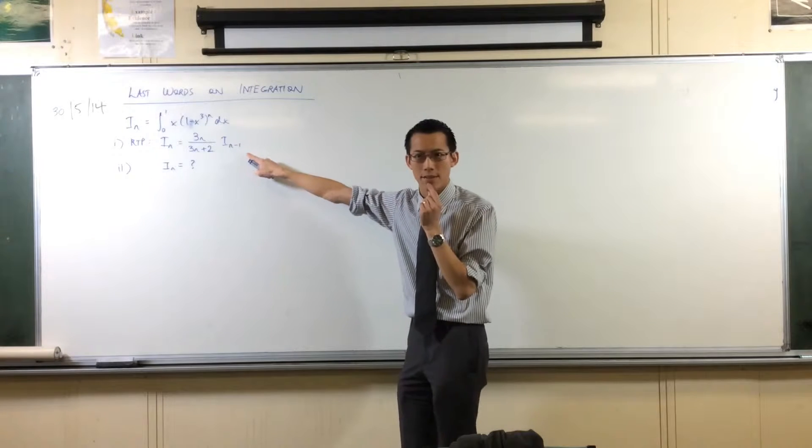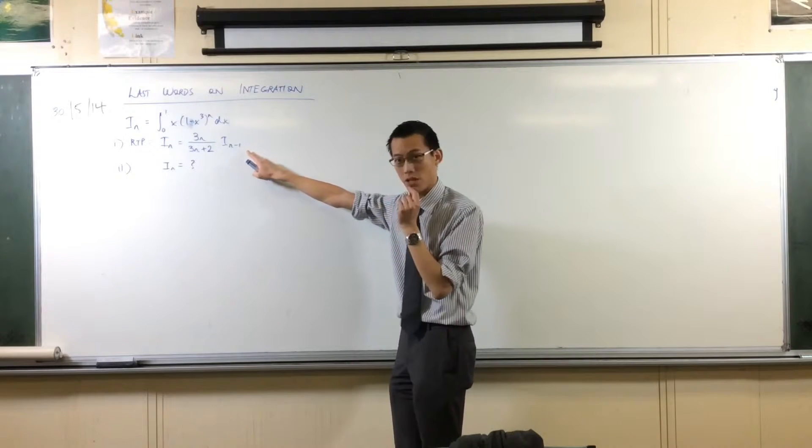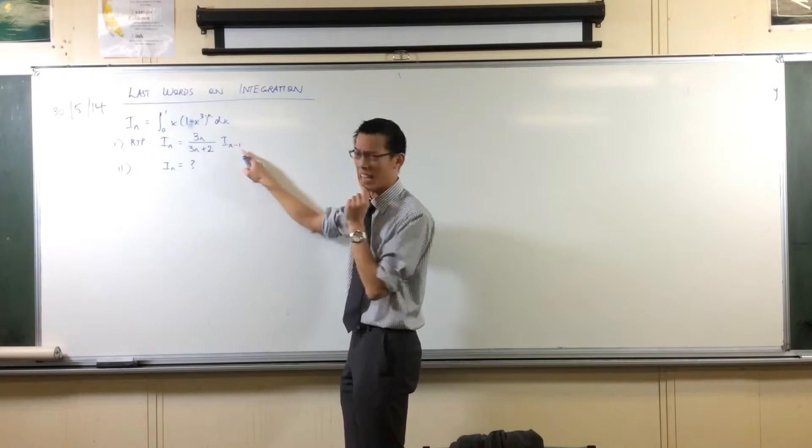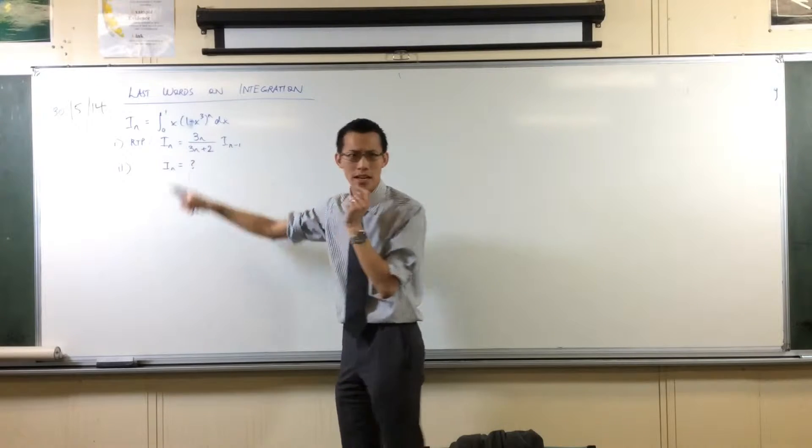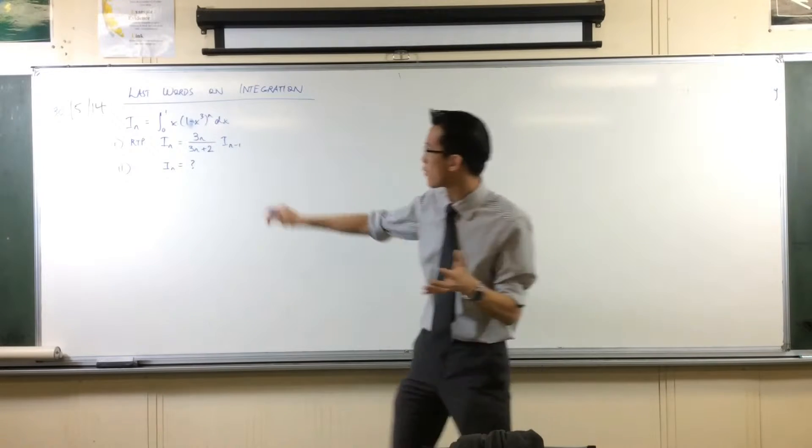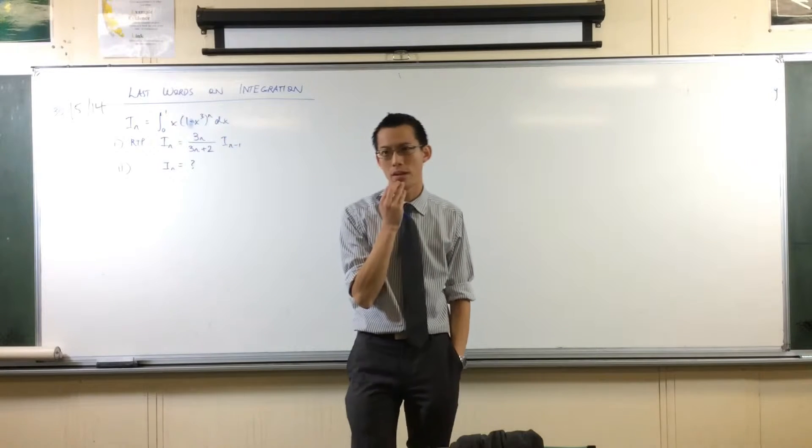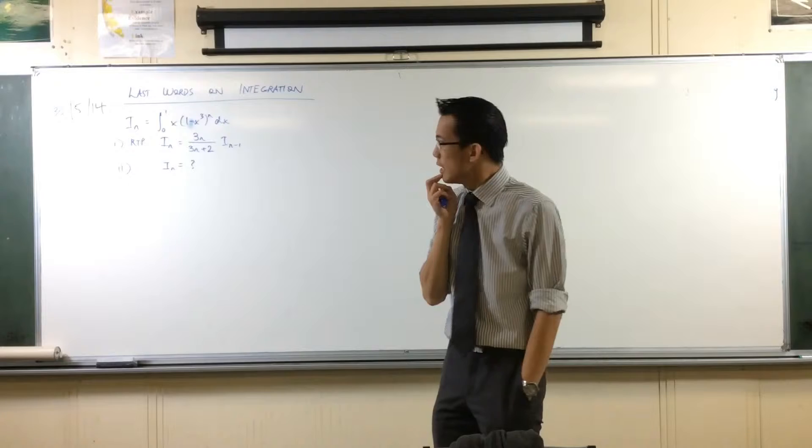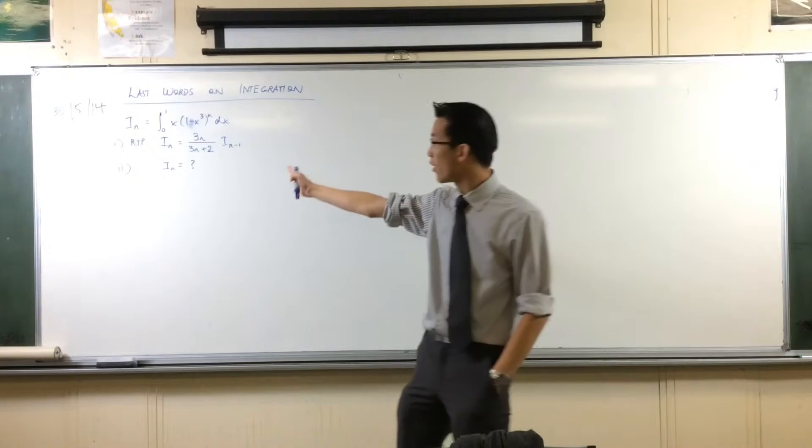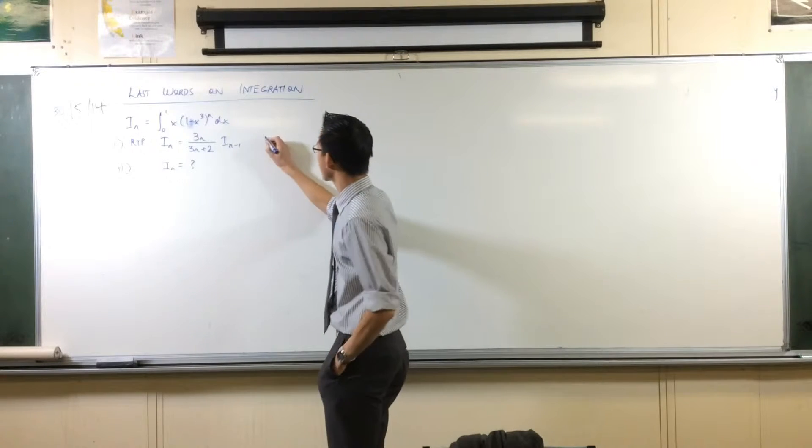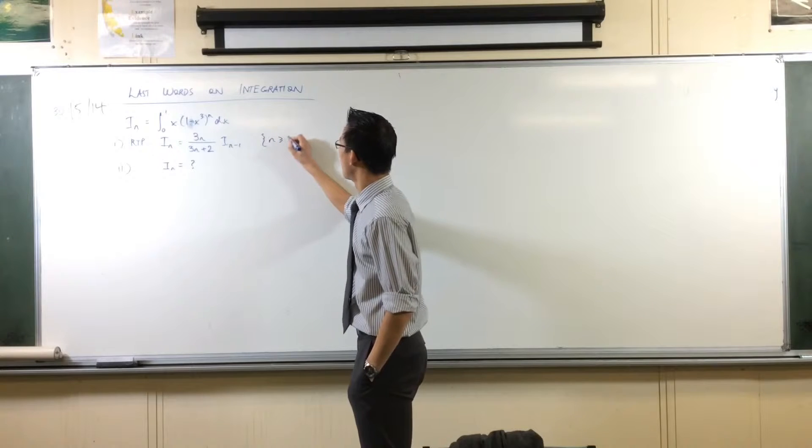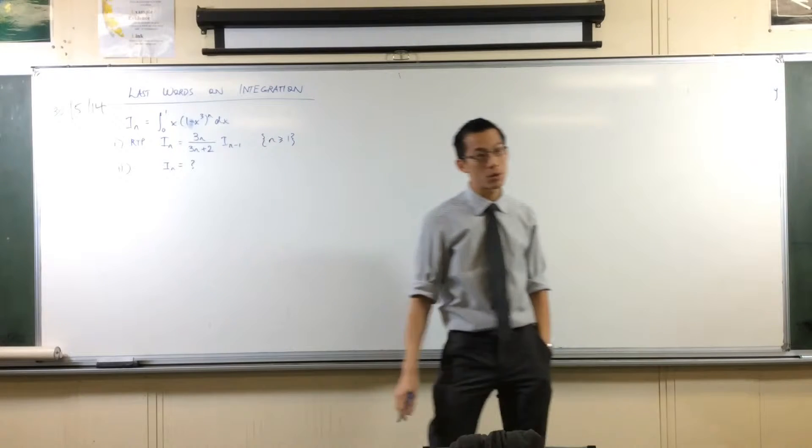This only accounts for n equals one and so on. You can see it can't account for n equals zero because it'll have I of negative one in there. The recurrence relation that we got only works for values of n greater than or equal to one.